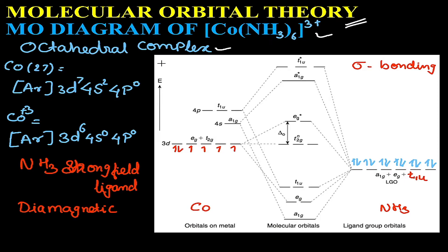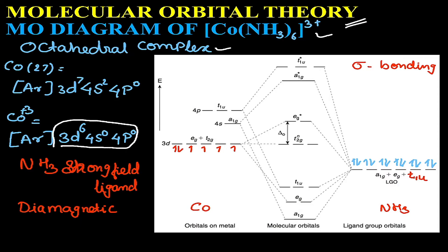In this particular complex, the electronic configuration of cobalt is [Ar] 3d^7 4s^2 4p^0. In this complex, the oxidation state of cobalt is +3, so the electronic configuration will be [Ar] 3d^6 4s^0 4p^0. In the formation of molecular orbitals, the orbitals that will participate are 3d, 4s, and 4p.